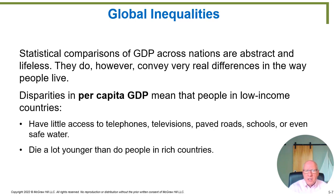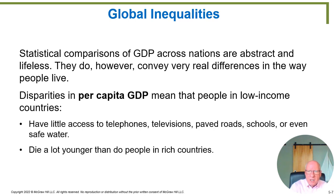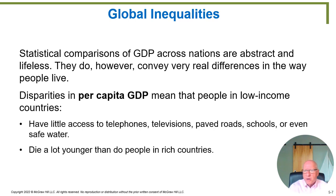Last but certainly not least: people die a lot younger in poor countries. That's another major problem when GDP per capita is low — it's also telling you something about life expectancy. The richer the country, the longer people live; the poorer the country, the sooner they die. Not only do you lack good access to schools when you're poor, you also don't have good access to medical care. So poorer countries generally across the board have less of the desirable things of life than do rich countries.